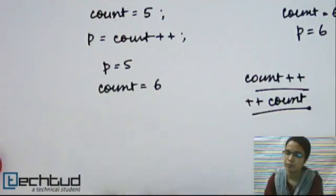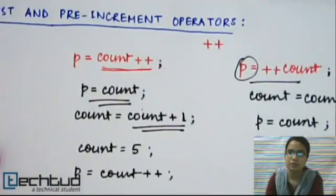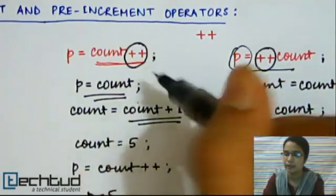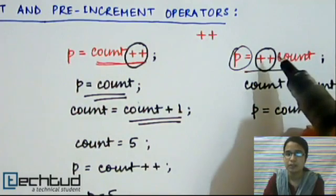Similarly, we have POST and PRE-decrement operators—the sign is --. The same thing happens here: it will act exactly like POST and PRE-increment operators, but here the value will be decremented instead of incremented.